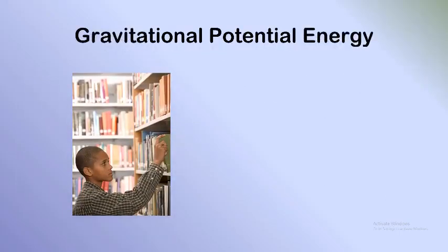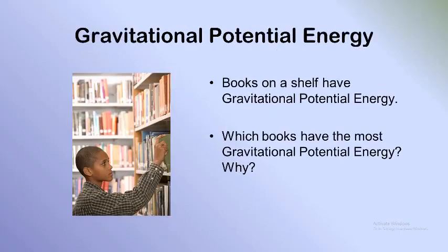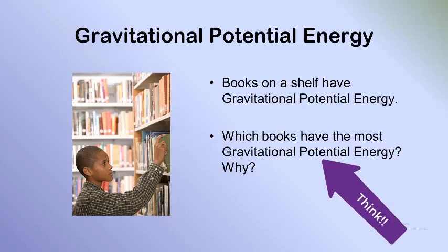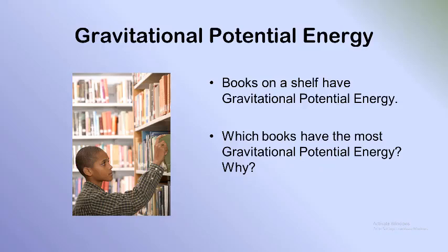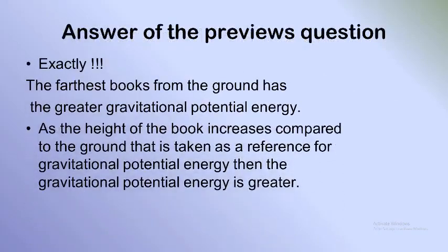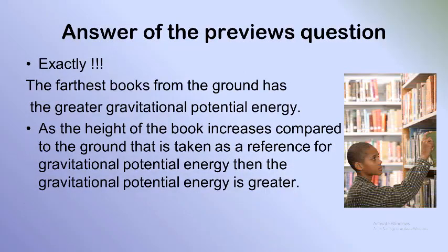Here we have books on a shelf. All the books have gravitational potential energy, but which book has the most? Take the reference for gravitational potential energy as the ground where the boy stands. The answer: the farthest books from the ground have the greatest gravitational potential energy, because as the height of the book increases relative to the reference on the ground, the gravitational potential energy is greater. So GPE depends on the height of the object with respect to the chosen reference.